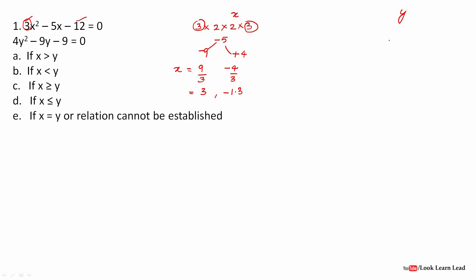Now similarly I'll solve for y. It won't take long — I'm just explaining, so it's taking time. For y we have 4, which I write as 2×2, and 9 as 3×3. I want -9, so I check: 12 and 3. I take -12 and +3. The first coefficient is 4, so it's 12/4 = 3 and -3/4 = -0.75. These are the values of y.